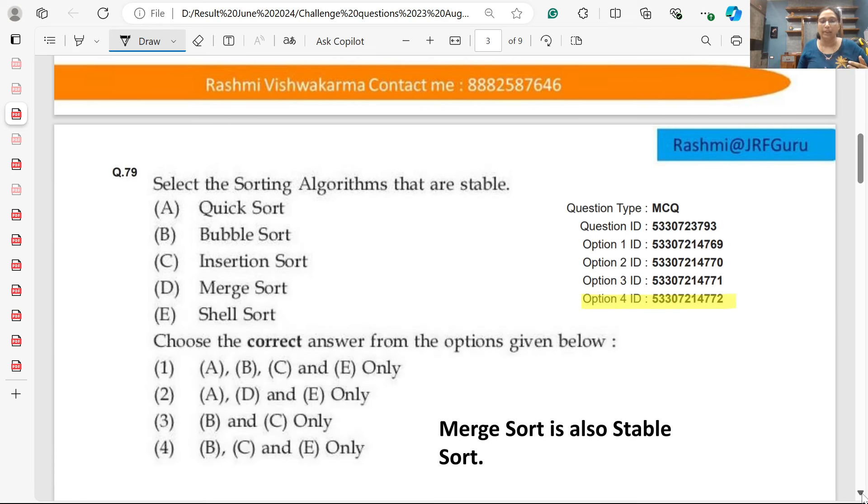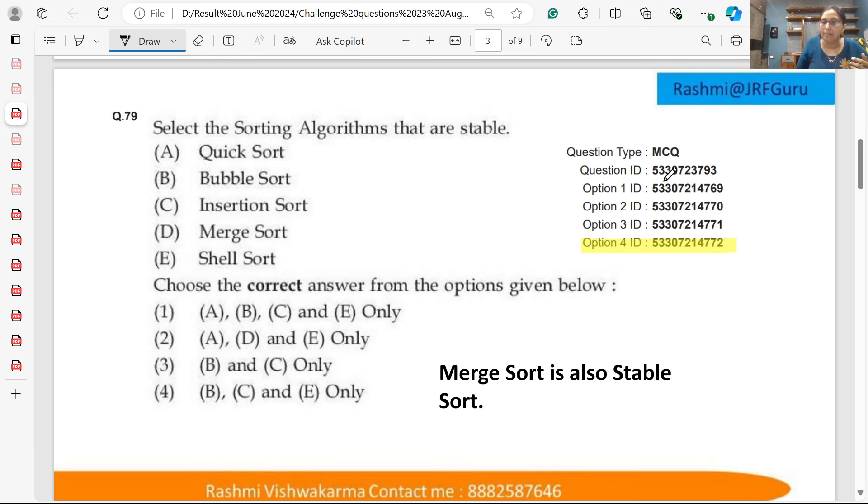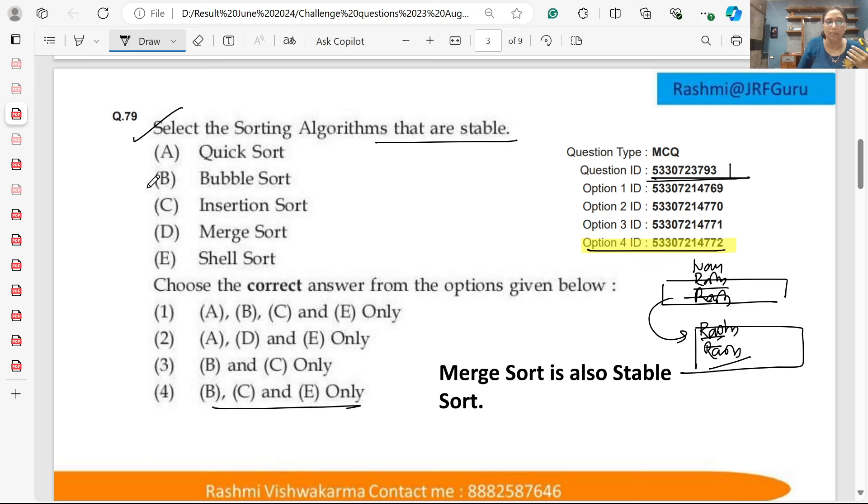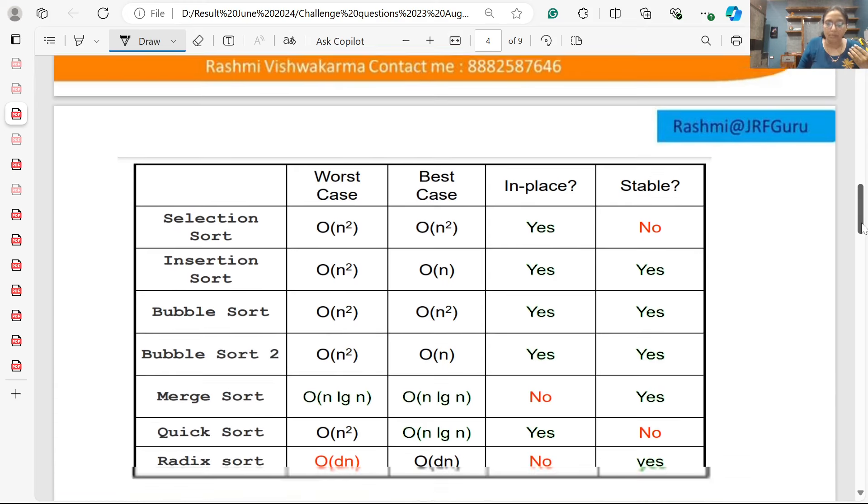Here is the first question, question ID 793. Select the sorting algorithms that are stable. Stable sorting means the first sequence with the same key is maintained after sorting. Suppose there are two Rashmi entries based on sorting by name. The sequence which was previously there is now maintained. According to them, option 4—BCE bubble sort, insertion sort, and shell sort—are the stable sorts.